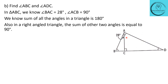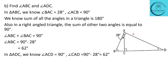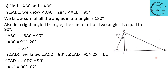Since one angle is a right angle, the sum of the other two must equal 90 degrees. So angle ABC plus angle BAC equals 90 degrees, and angle ABC equals 90 minus 28, which is 62 degrees. Now for the other unknown angle ADC: considering triangle ADC, angle ACD is 90 degrees, and angle CAD is 90 minus 28, which is 62 degrees. So angle ADC equals 90 minus 62, which is 28 degrees. The unknown angle ADC is equal to 28 degrees.